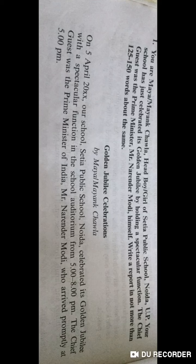The function has been held, and we will write the report using second form or past passive. The title will be 'Golden Jubilee Celebration' — we don't change it much. By Maya, or if it's a boy, Mayank Chawla. First, we write the date the function was celebrated. Then: 'Setia Public School, NOIDA, celebrated the golden jubilee with a spectacular function in the school auditorium. Mr. Narendra Modi, the Prime Minister of India, was the chief guest. He arrived promptly at 5 o'clock.' In the first paragraph, we have shared all the information — what happened, when, and who the chief guest was.